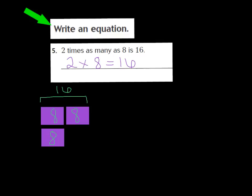Okay boys and girls, let's come back and look at our model. Here's the model I drew. I have the rectangle on the bottom representing the 8. I have this 8 two times because it says 2 times 8 is 16. So I have my 8 two times, and these two 8s together represent the answer 16, and that's what my bracket is showing me. If you didn't get it right, that's fine — go ahead and fix your model so it looks like mine, and we'll move on.